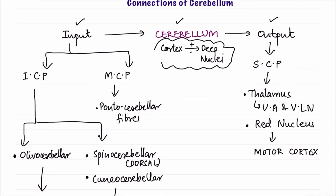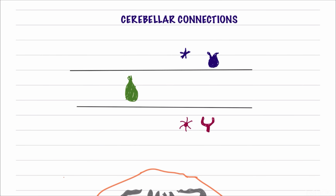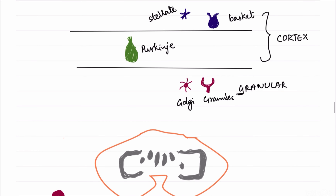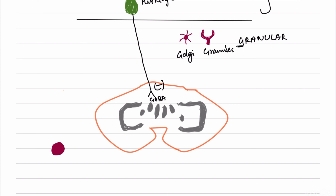Now let's analyze the intrinsic circuit of cerebellum in detail. In the cerebellar cortex we have the external layer with stellate neurons, then basket cells, then the molecular layer with Purkinje neurons - which are very important in the intrinsic circuit - and finally the inner granular layer with Golgi cells and granular cells. The key connection is that the Purkinje fiber connects the cortex with the deep nucleus. Since the Purkinje fiber is inhibitory and releases GABA, it inhibits the excitatory output of the deep nuclei.